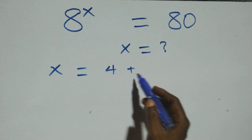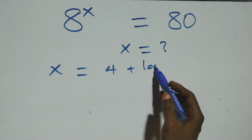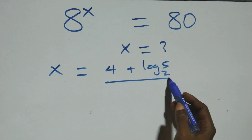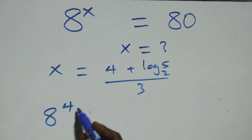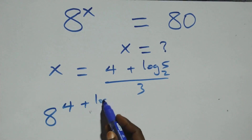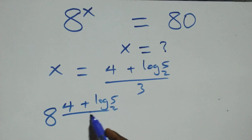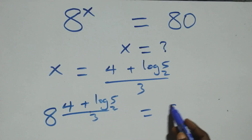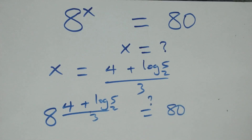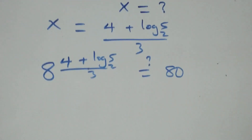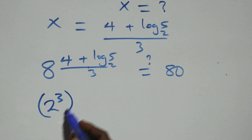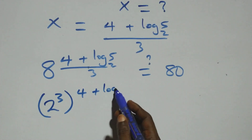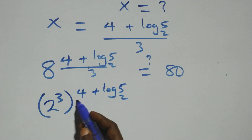Then what we have here: we verify by substituting back. We have 8 raised to the power of 4 plus log₂5 plus 2, all over 3. We can also express 8 as 2 raised to power 3, which is then raised to the power of 4 plus log₂5, all over 3.